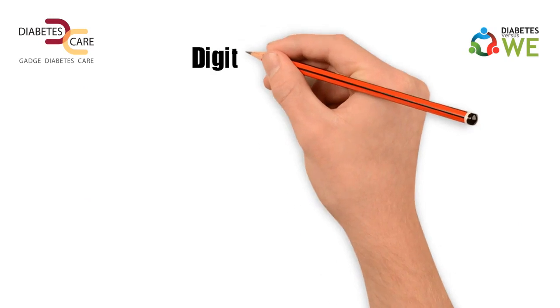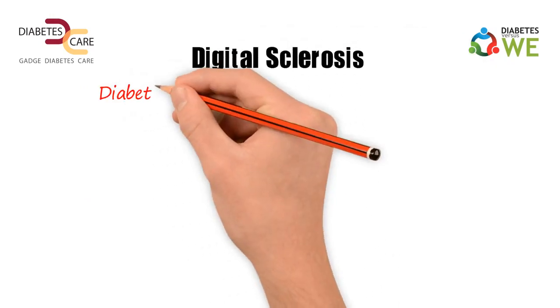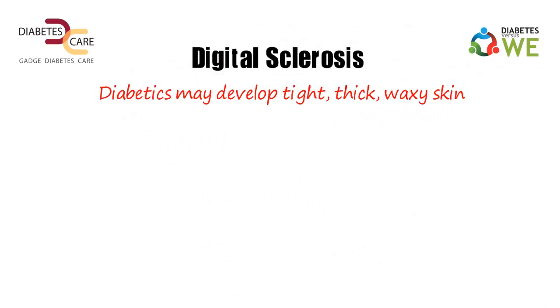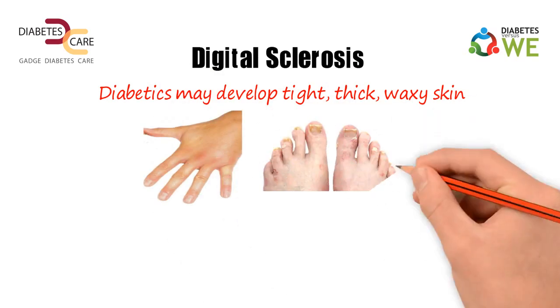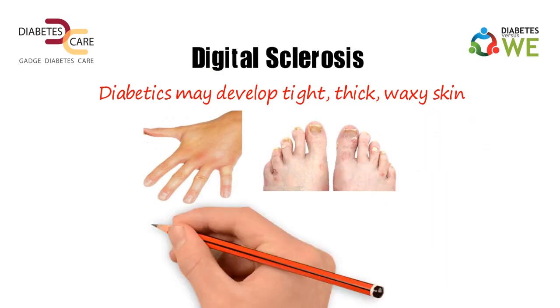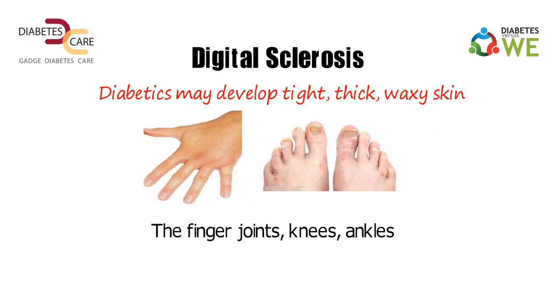Digital sclerosis: diabetics may develop tight, thick, waxy skin on the back of their hands or toes. The finger joints, knees, ankles, or elbows may become stiff.